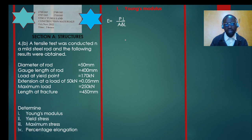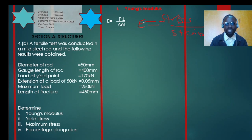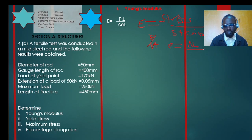Young's modulus E is equivalent to stress over strain. Stress can be found as force over area, and strain is change in length over original length. In this case, we are going to utilize the formula: E = (F × L) / (A × ΔL).